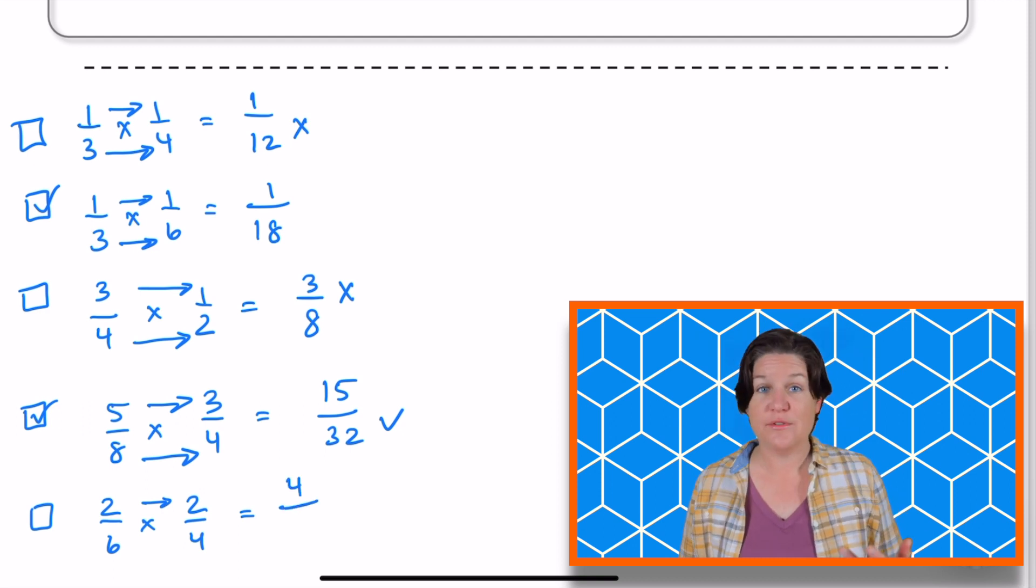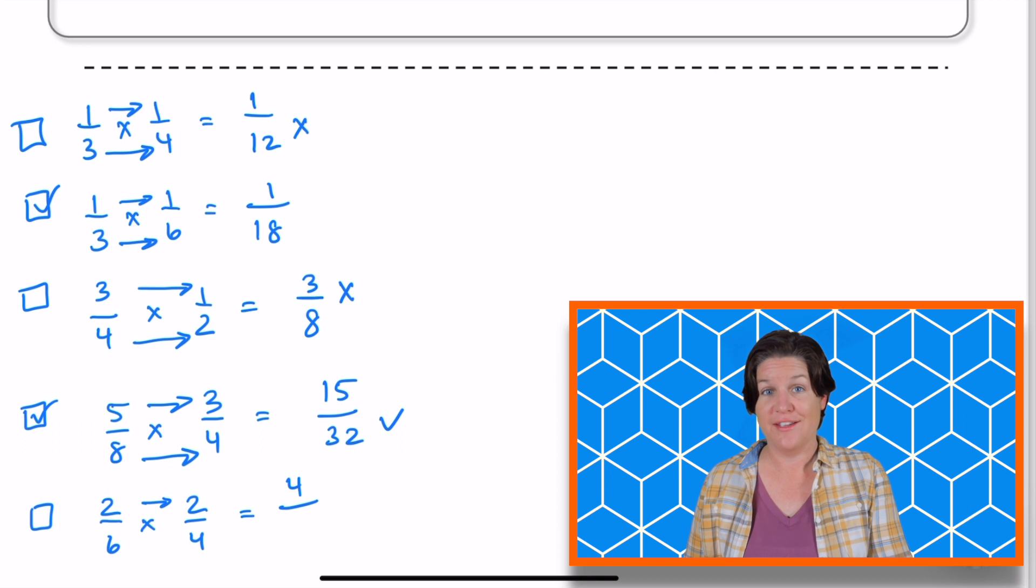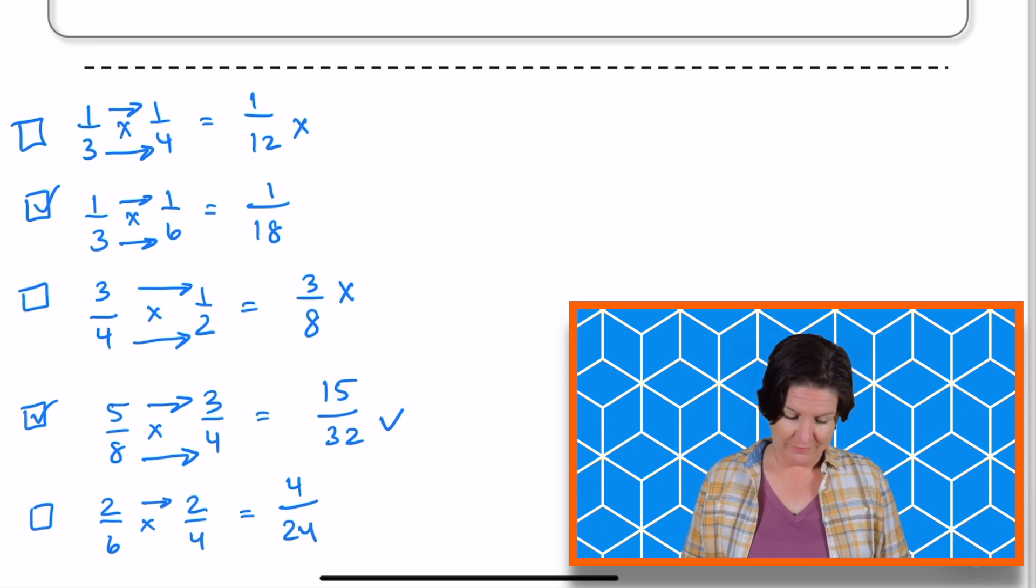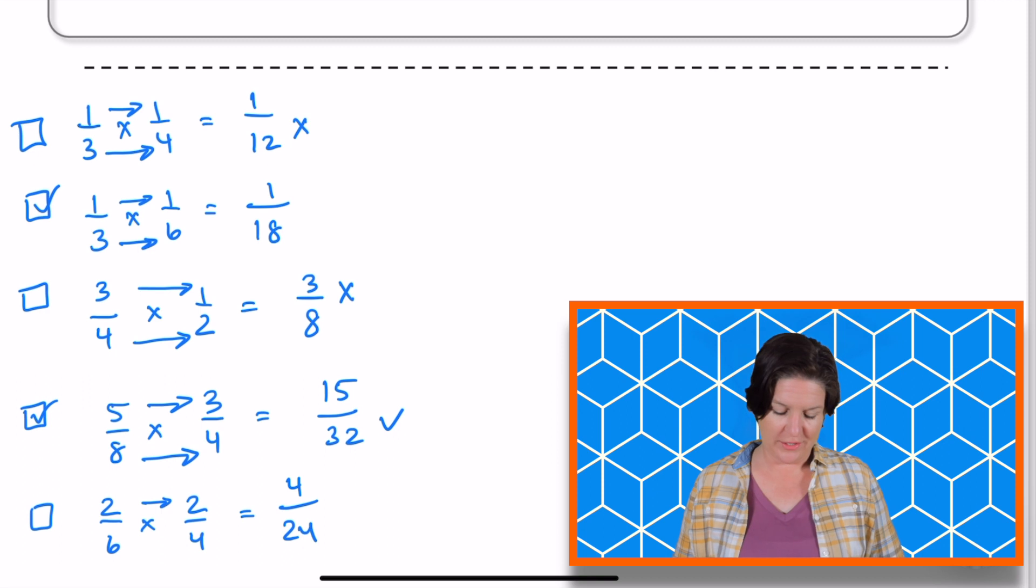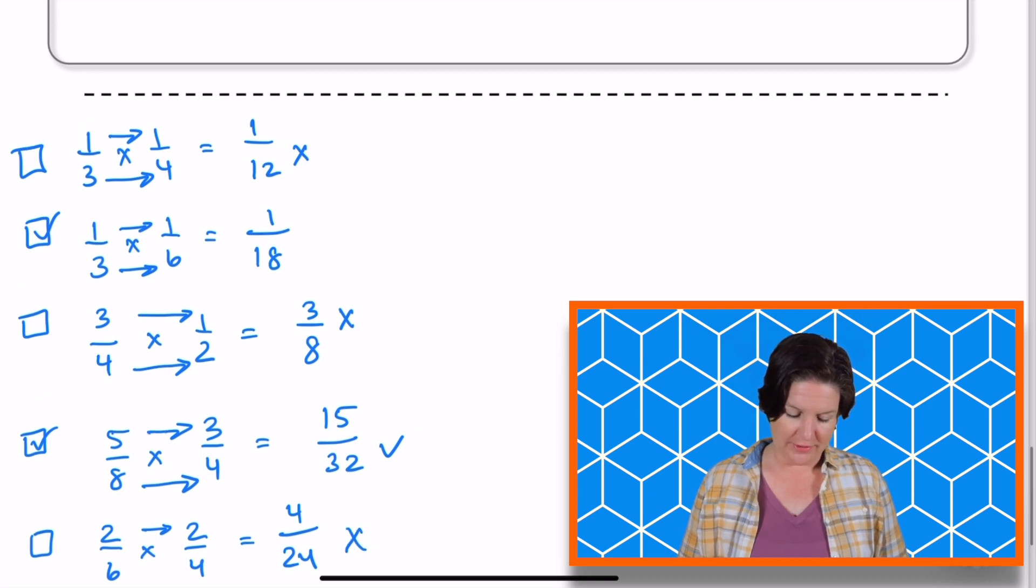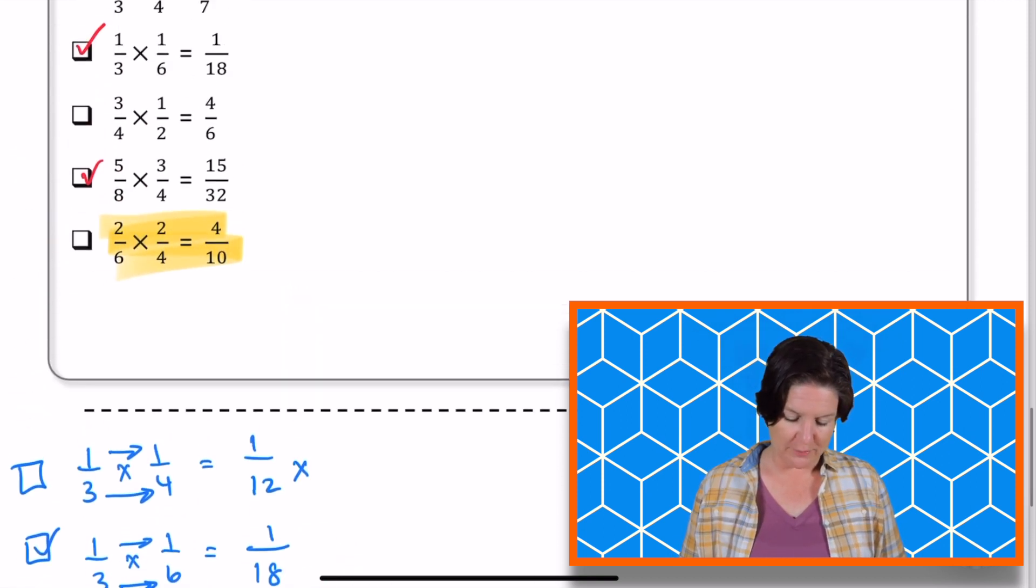And six times four equals what? 24, right? So it would be four twenty-fourths, not four tenths. So we cannot mark that one. So those are our two answers right up there.